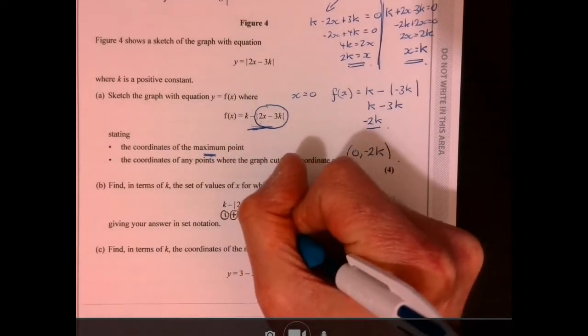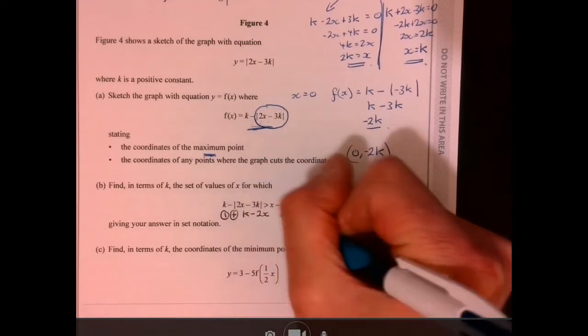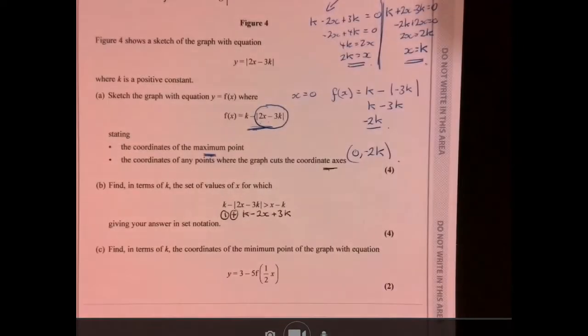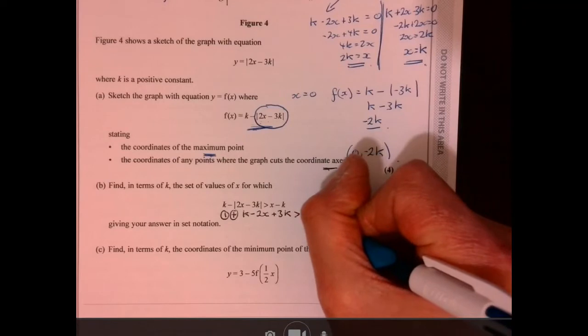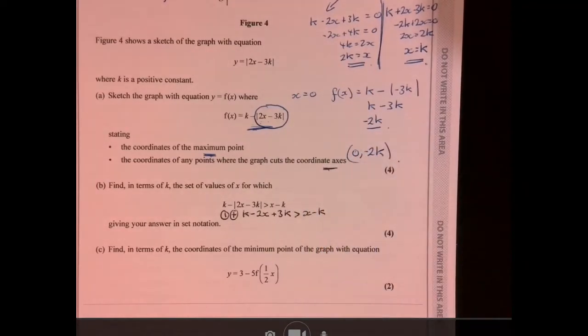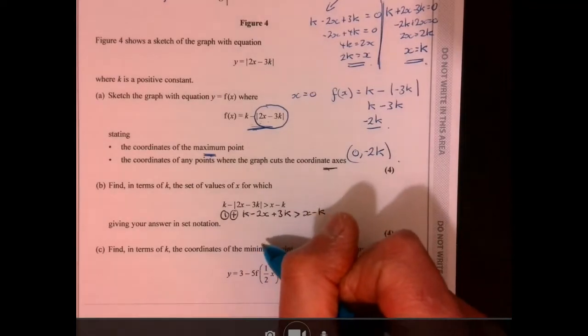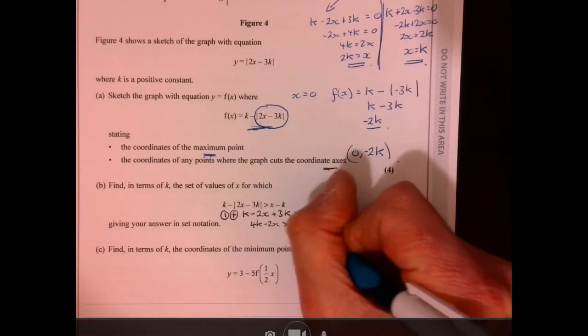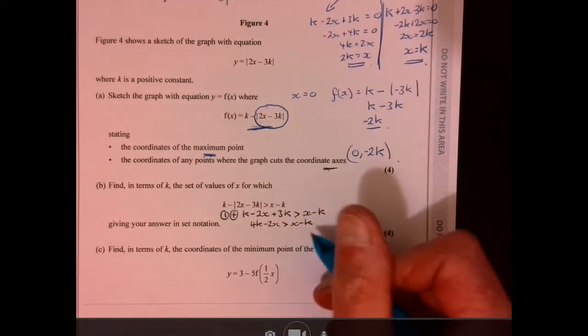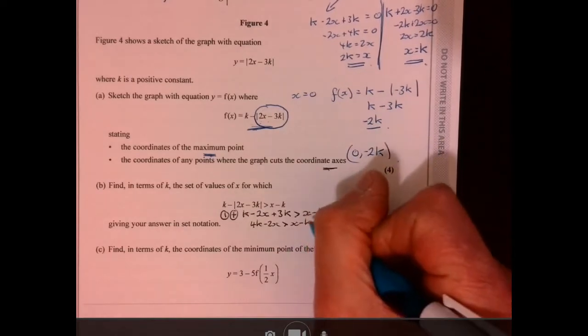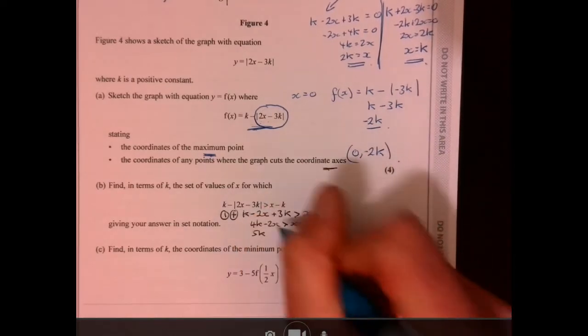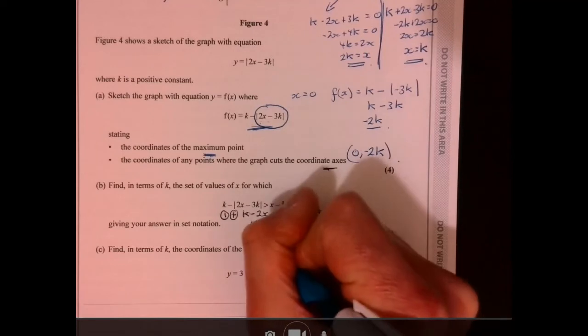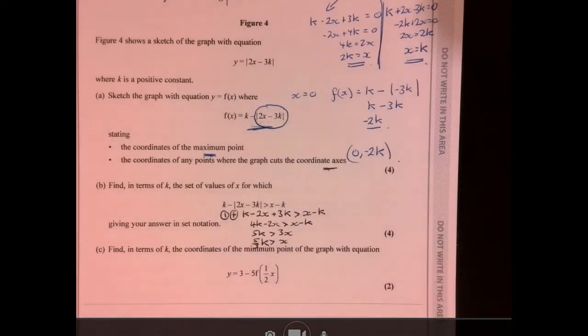So x, and then we're going to have minus 2x, sorry, k minus 2x. And then it would be plus 3k. And then that's got to be more than x minus k. And then let's obviously just tidy this up. What have we got? We've got 4k minus 2x. That's more than x. Sorry about squeezing this on. I'm just trying to kind of fit it on so you can see it all together. Add the k. Add the 2x. So x has to be less than 5 thirds of k.